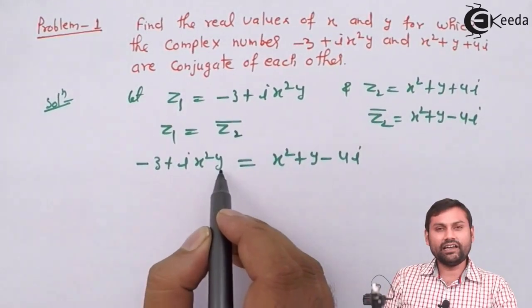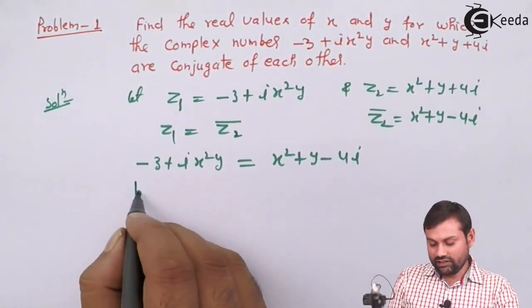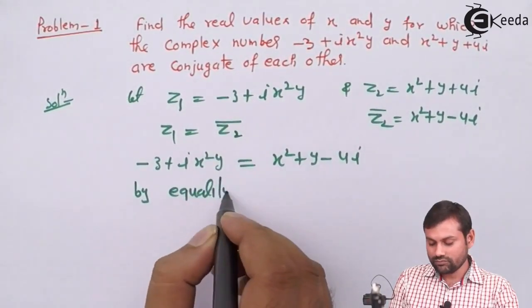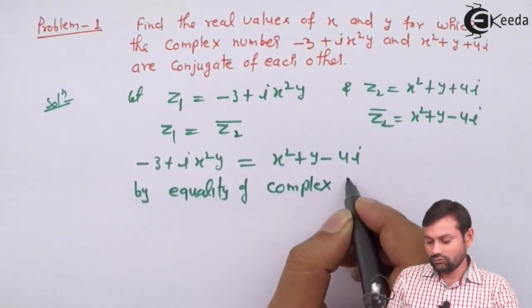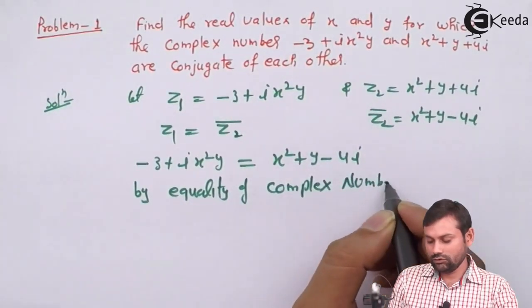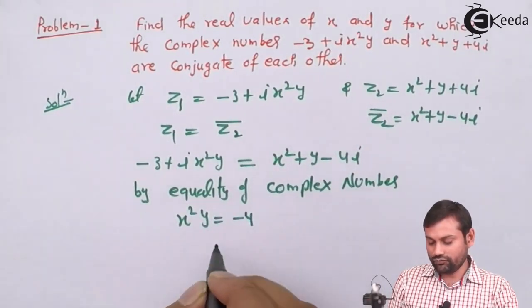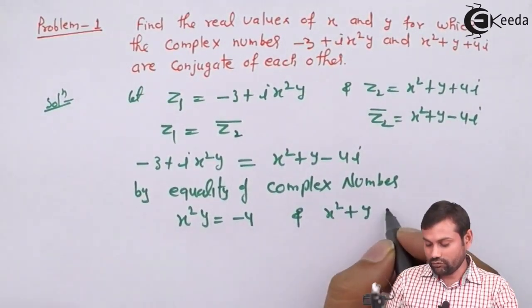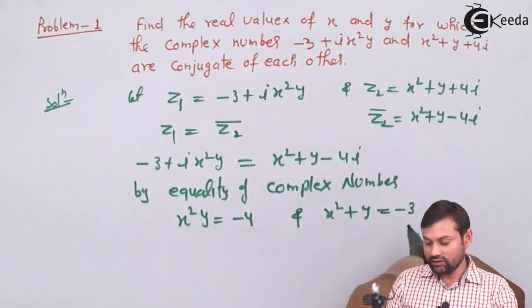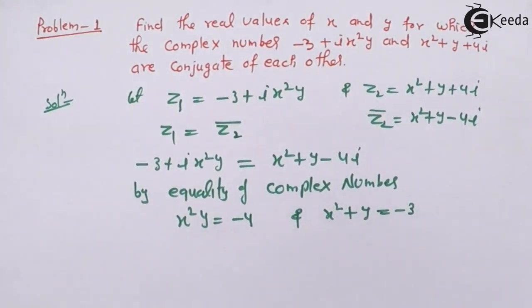तो यहाँ पर यह concept use करेंगे। इसका imaginary part क्या है — x²y; इसका imaginary part क्या है — 4। By equality of complex numbers: x²y equals to minus 4, and x² plus y equals to minus 3। अब दो equations हैं, दो unknowns हैं, हम easily solve कर सकते हैं।